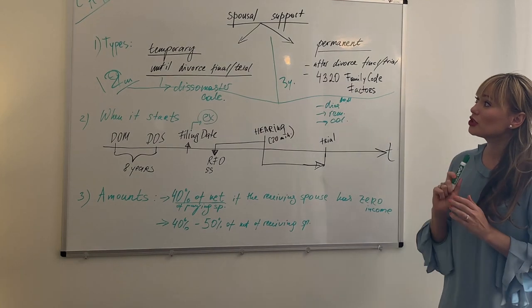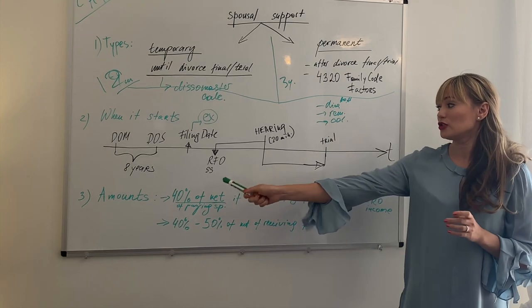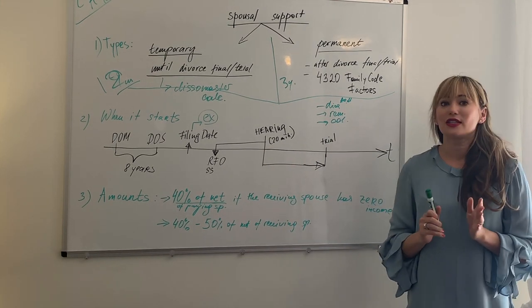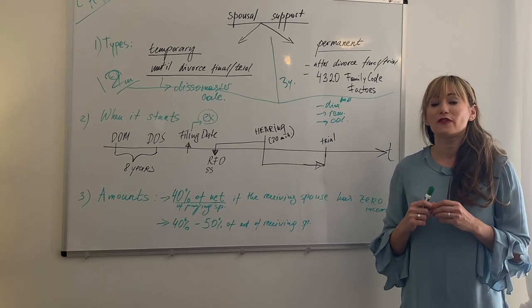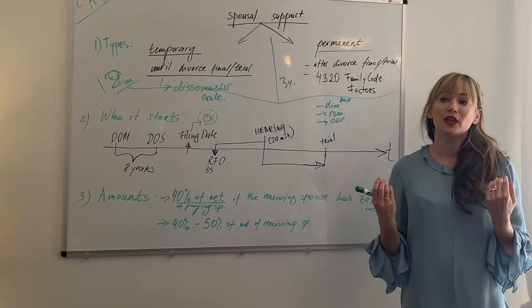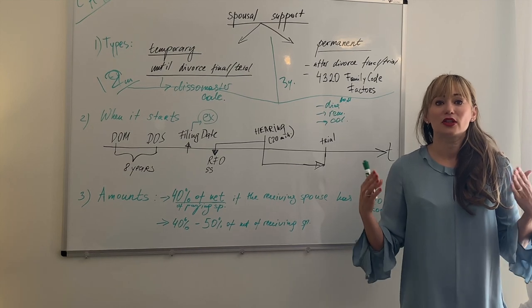So spousal support is something that court awards not automatically but if you file a so-called request for order. Spousal support is based on the length of the marriage. So for example, if the couple was married less than 10 years, then the spousal support length is considered based on the length of marriage.